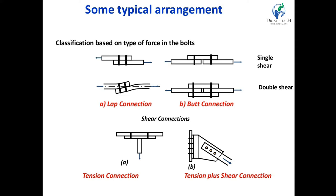When two members are connected by one line of bolts, it is called a lap joint. In a butt joint, the two main plates are placed against each other and additional cover plates are provided on one side or both sides — this is called a butt joint.